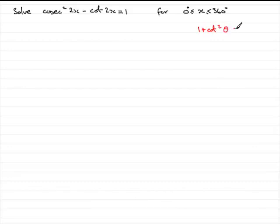What you should remember is that there's an identity: 1 plus cot squared of any particular angle, let's just say theta, is identical to cosec squared of that same angle theta. We should know this identity.